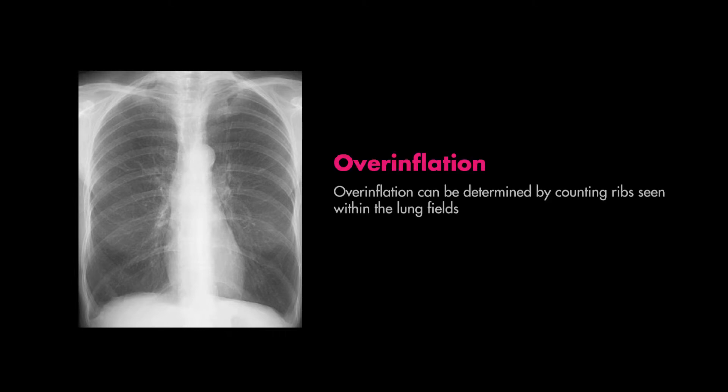When you look at this chest x-ray, you might note that the lungs are overinflated, and you could determine this by counting the ribs you see in the lung fields. If you haven't seen the video on chest x-ray anatomy and how you can determine overinflation, be sure to check out part 1 in this series in the link below.